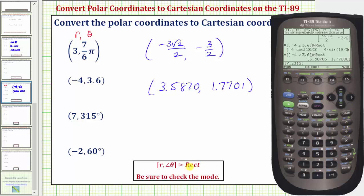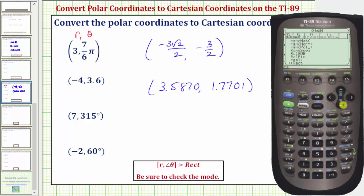Now we need to select the rectangle function, so catalog, two for R, scroll down to rectangle, which is here, enter, and enter.